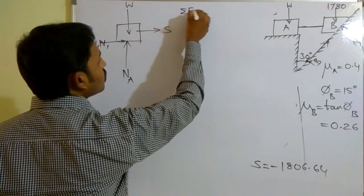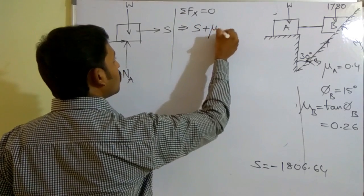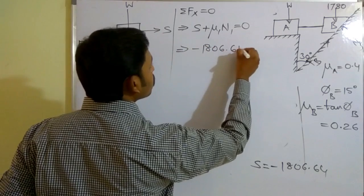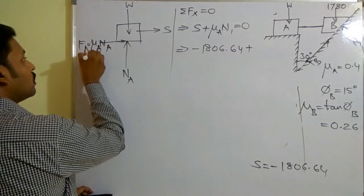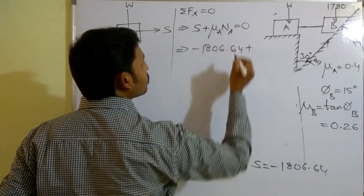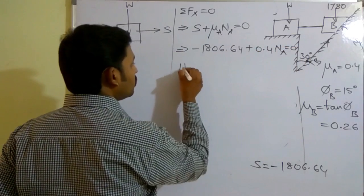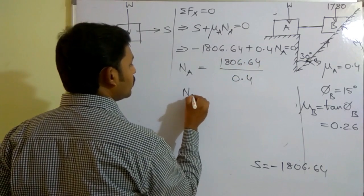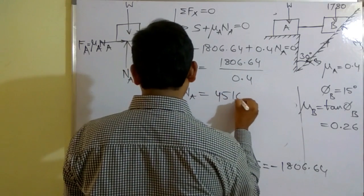Applying Σfx = 0 for block A: S along the positive x-direction plus μ_a × N_a along the positive x-direction equals zero. Substituting S = −1806.64 N and μ_a = 0.4: −1806.64 + 0.4 × N_a = 0, giving N_a = 1806.64 / 0.4 = 4516.6 N.